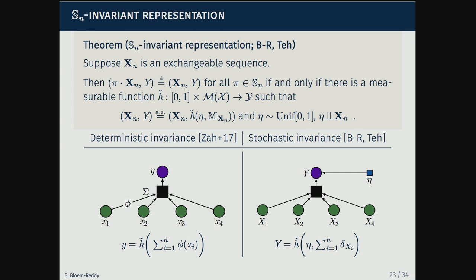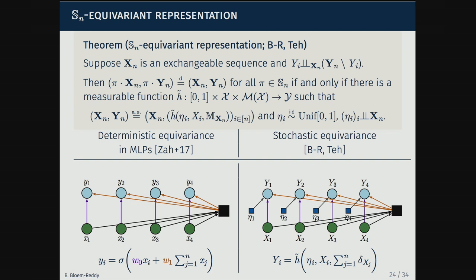You can imagine the empirical measure as a one-hot encoding in X-space of our input sequence, then run through a function to get the output. A similar result holds for equivariance, where you can recover that early result with the same structure: the elements of the output equal functions of elements of the input, the empirical measure, and their own random noise variable.